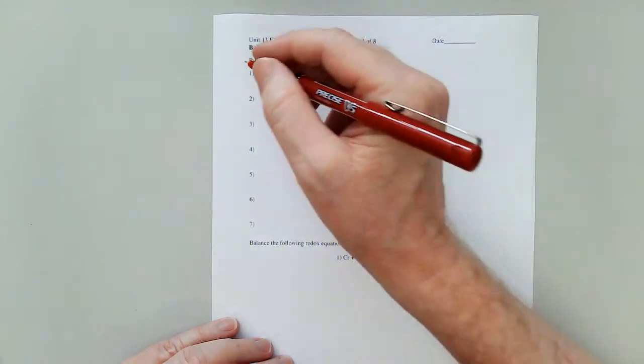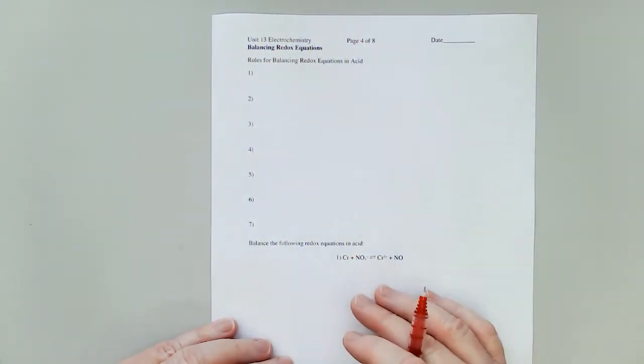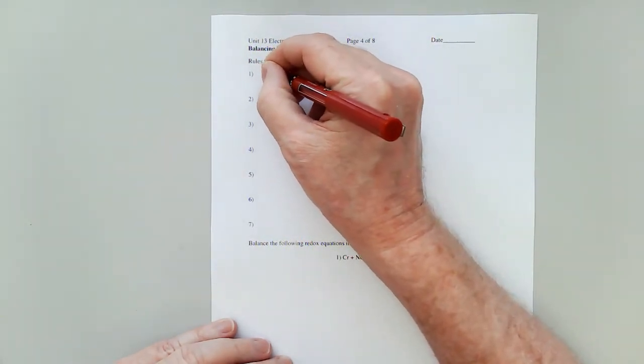So there are some rules here. We're going to write them out. They're not going to make a whole lot of sense until we practice them, and then they'll be really cool for you. First, we need to find the half reactions.